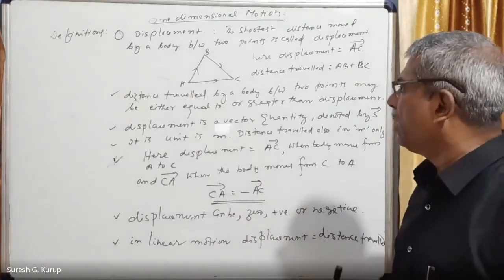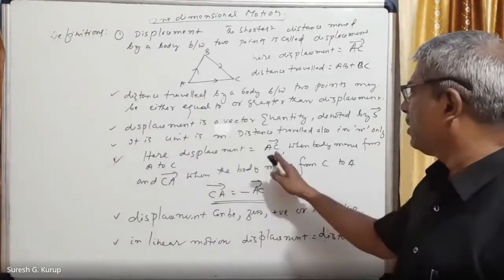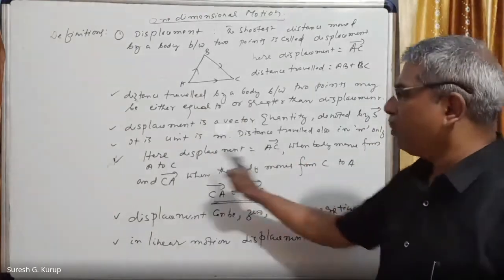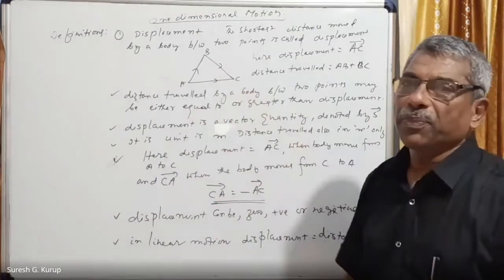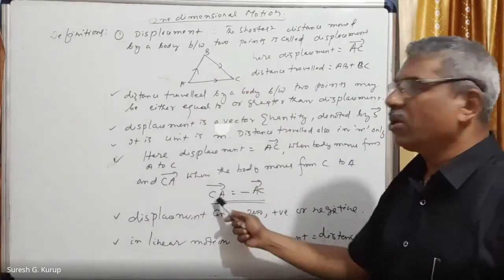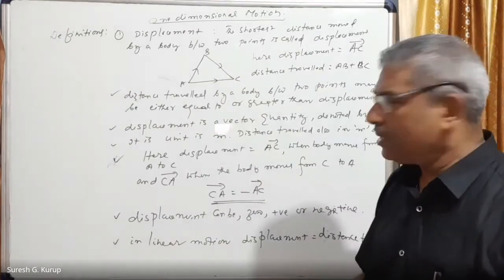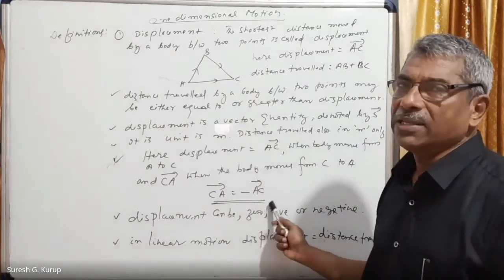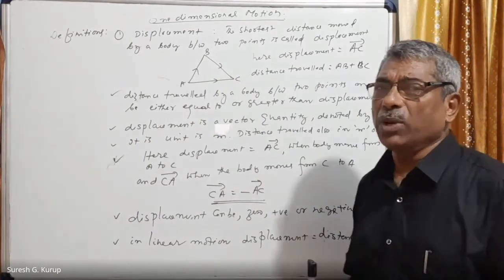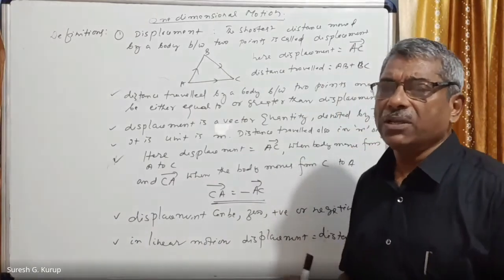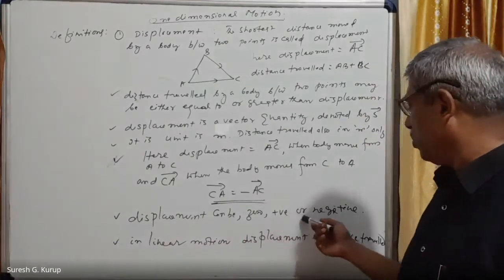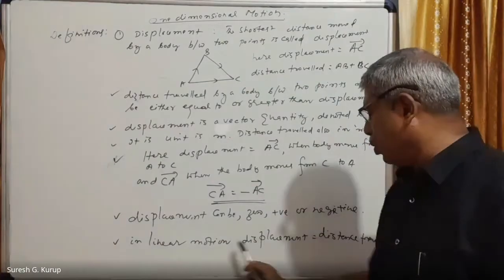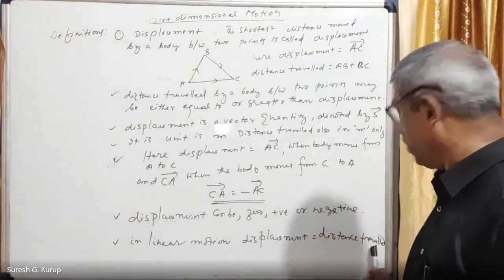The shortest distance between the initial and final point of a body's motion is called displacement — represented as vector AC. If the body moves from C to A through B, the displacement is CA, which equals minus AC, because displacement is a vector quantity. In linear motion, displacement equals distance traveled.